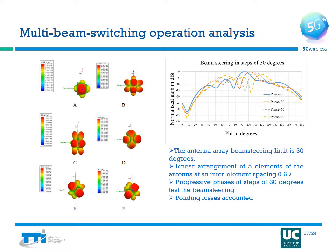All of these beams are put together in a single figure to compare the different beam shapes obtained by this antenna element. On the right side you see beam steering done in steps of 30 degrees using a linear antenna array with five elements spaced at 0.6 lambda to avoid grating lobes. When a progressive phase shift of 30 degrees is applied, beam steering can be done as shown, with pointing losses also accounted for in the figure.